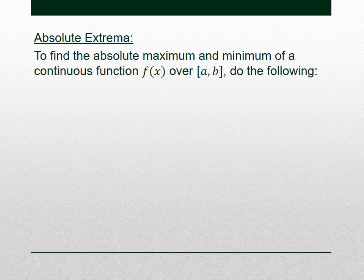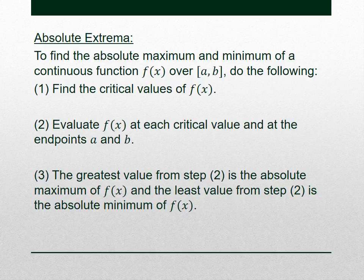To find absolute extrema of a continuous function over a closed interval: Step 1 — find critical values that are in the interval from a to b. Step 2 — evaluate f(x) at the critical values and the endpoints. Step 3 — the greatest value from step 2 is the absolute maximum, and the least value is the absolute minimum. You just find the heights at critical values and endpoints, then pick the biggest and smallest.